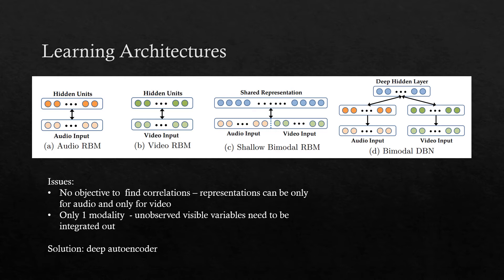This is fixed in Figure D. The bimodal deep belief network model from Figure D trains the models using a greedy method. It uses the pre-trained data from Figures A and B and stores them in a hidden layer, allowing the model to correlate across modalities represented by the second layer. However, even with greedily training an RBM, there are still a couple of issues: there is no objective to find correlations, meaning representations can be only for audio or only for video, and only one modality can be present during supervised training and testing.